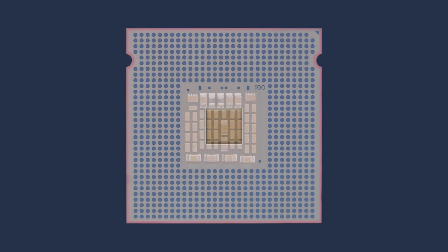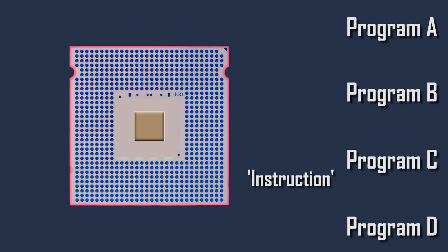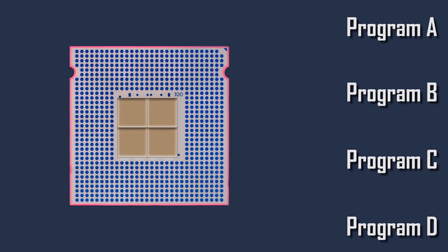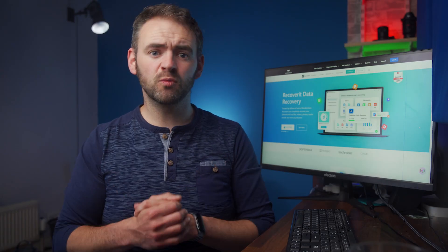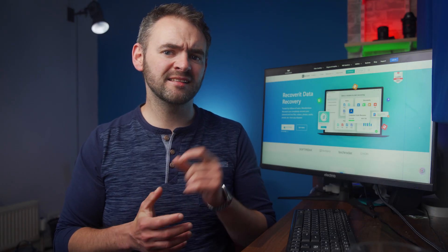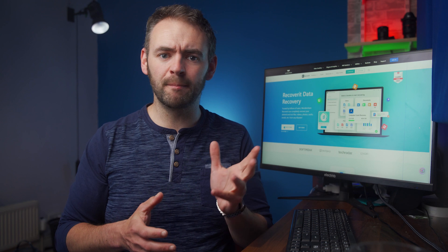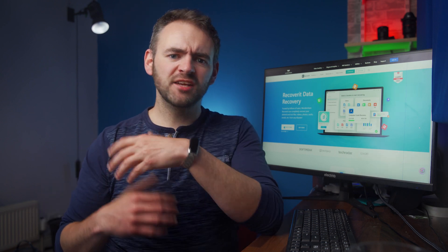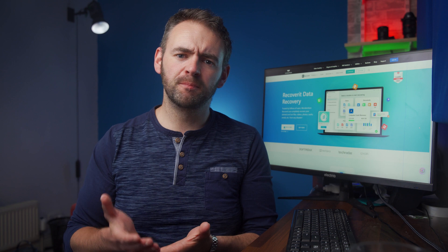which it does by running instructions within its cores. CPUs used to only have one single core, which meant they could only run one process at a time. However, modern CPUs have multiple cores, allowing them to run instructions for different programs simultaneously. It's also worth understanding that the CPU interacts with other components, such as RAM or your hard drive.